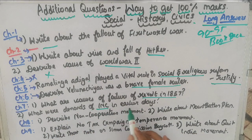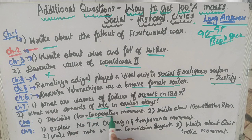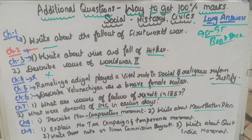In chapter 7, what are the causes of failure of the Revolt of 1857? Second question: what are the demands of the Indian National Congress in earlier days? Chapter 8: describe the non-cooperation movement, and write about the Mountbatten Plan.